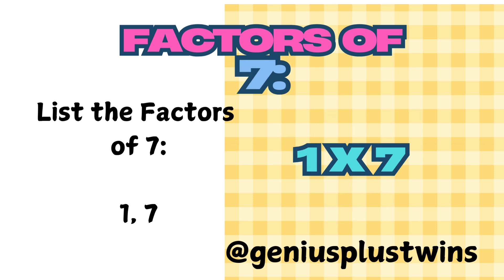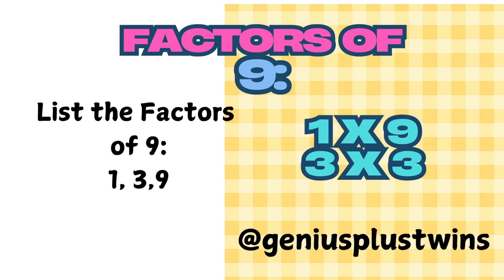In the next example, we are going to find the factors of 7. In this case, 7 only has 2 factors — the number 1 and itself — because 7 divided by 1 equals 7, and it needs to divide evenly without a remainder for them to be factors. 1 times 7 is 7, so the two factors for the number 7 are 1 and 7.